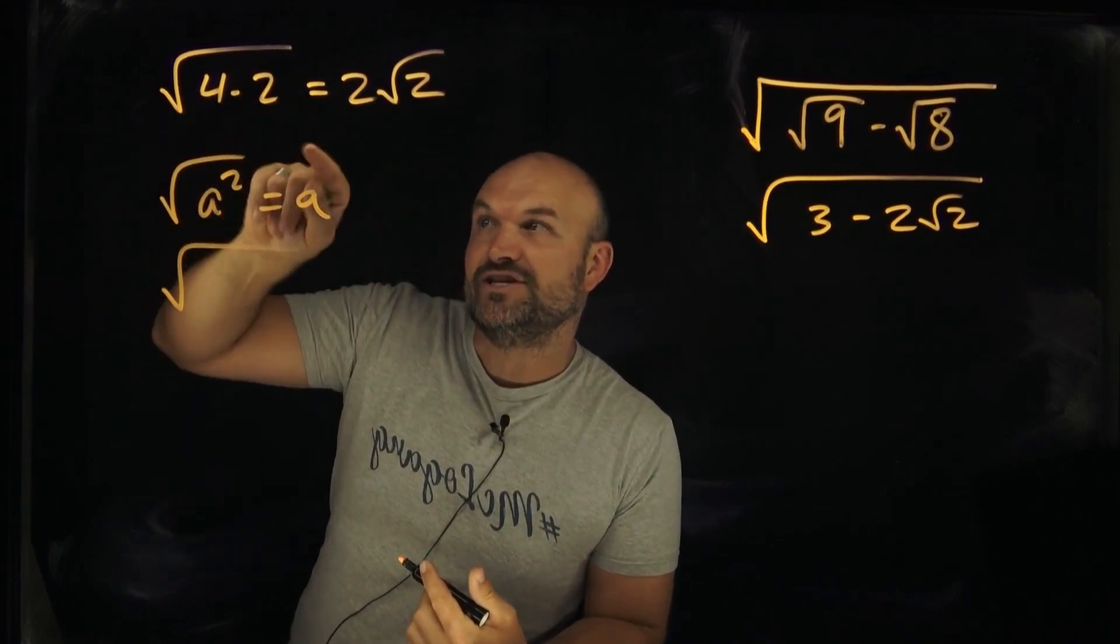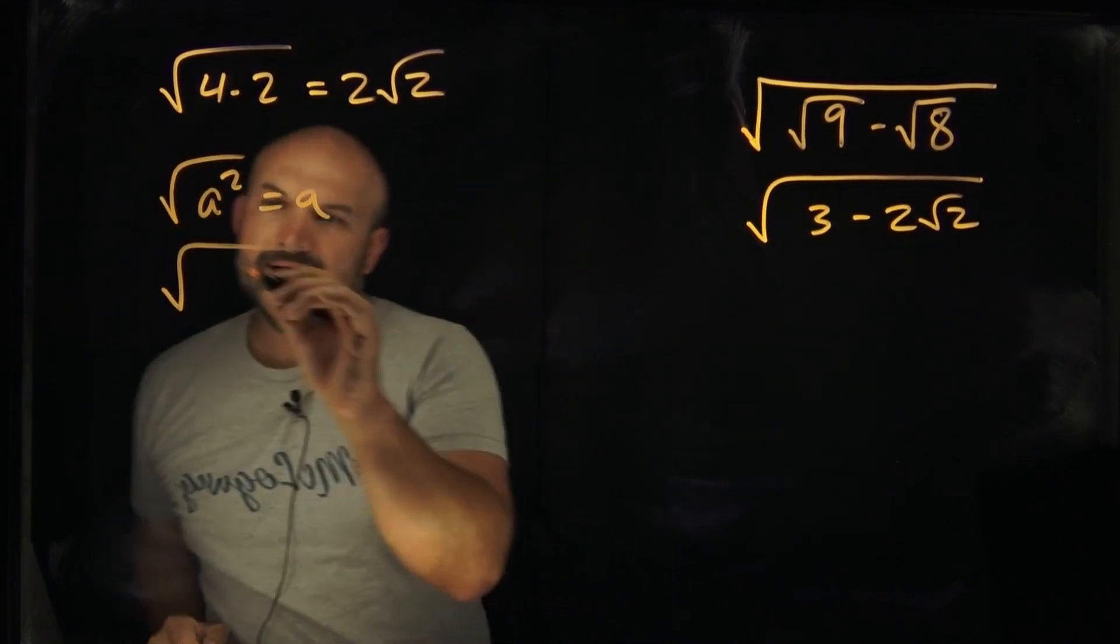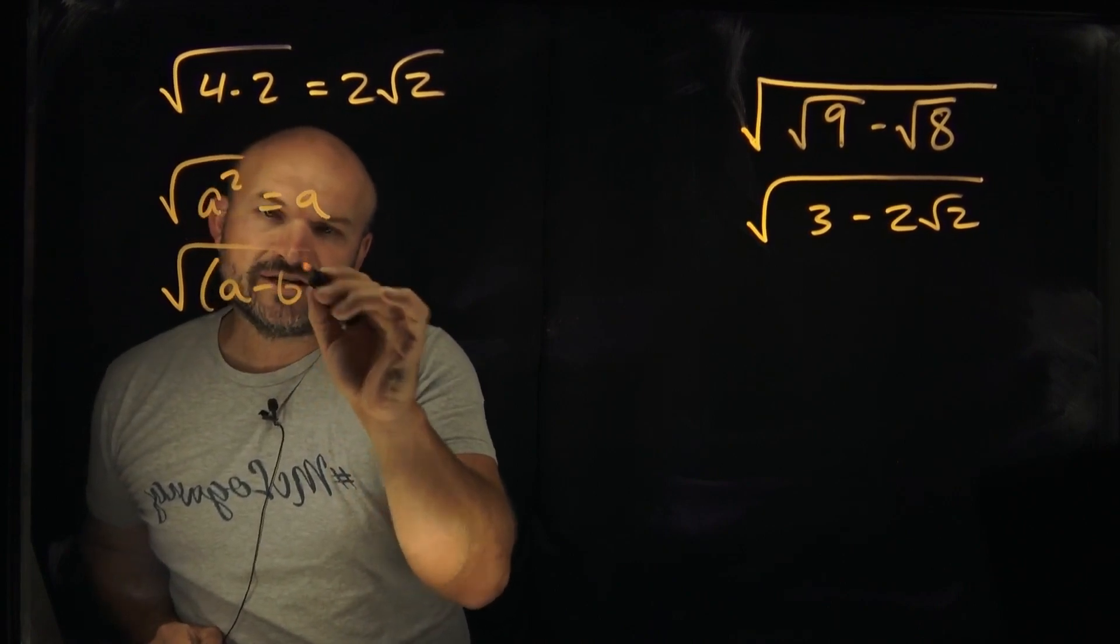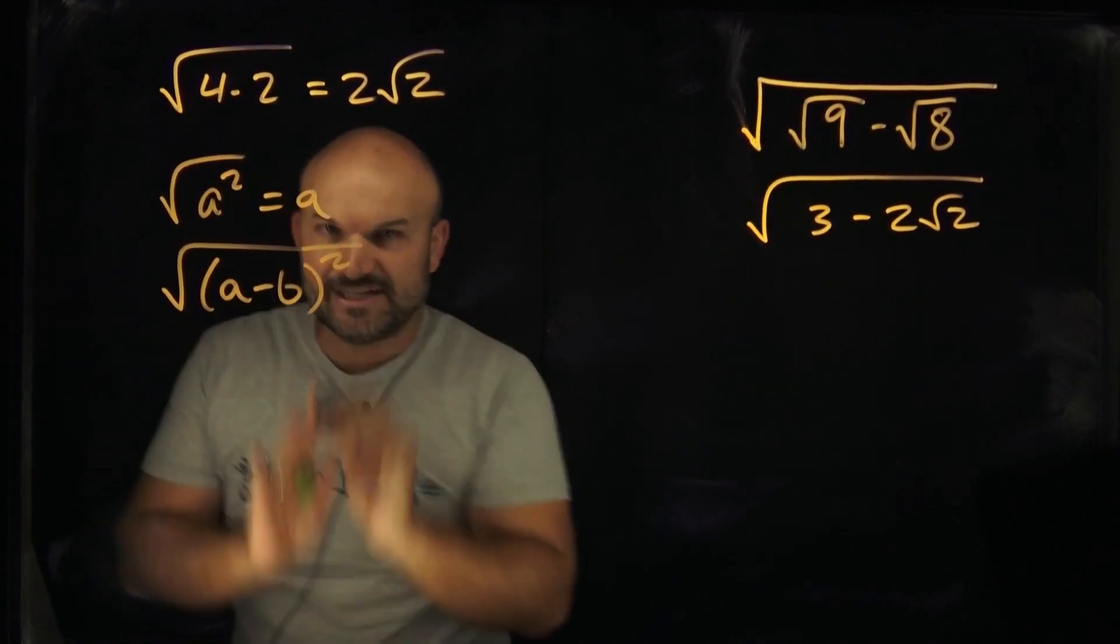Like in this case, see how we separated this by multiplication? Then I can take the square root of 4, right? But I can also do like an expression. I can do a minus b, quantity squared, right?